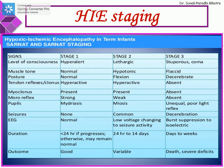Stage 3 is the most severe stage of HIE, with outcome being death or very severe neurodevelopmental deficits. The baby is stuporous or comatose. Muscle tone is flaccid; the baby may be in decerebrate posturing. Tendon reflexes and primitive reflexes like Moro are absent. Pupils are unequal with poor response to light. Seizures are very common, and duration is days to weeks.